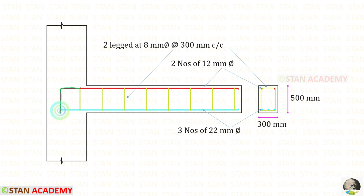The reinforcement details show the development length of 1176 mm: 500 mm extended into the column, 500 mm extended downward, and a 176 mm bent-up portion. This concludes the session. Thank you for watching this video.